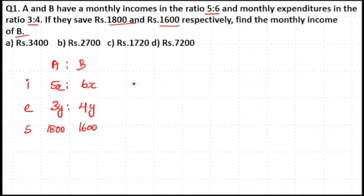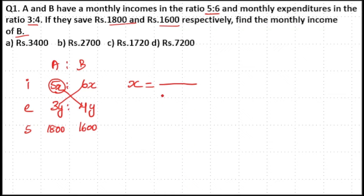Now if you want to find the value of x, take the first and second row and mark the first value, then cross multiply between 5 and 4, then subtract 6 into 3 from it. This will be your denominator of x — that is, 5 into 4 minus 6 into 3 will be your denominator of x.